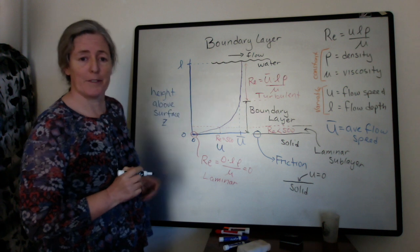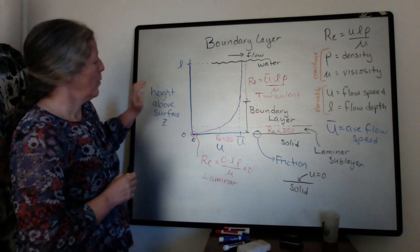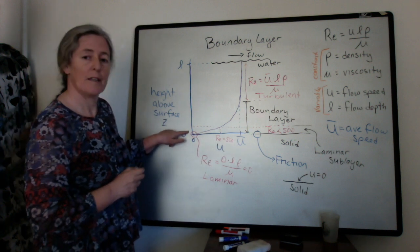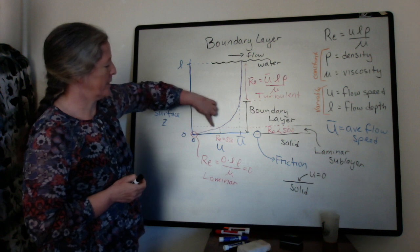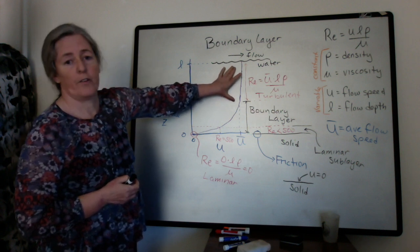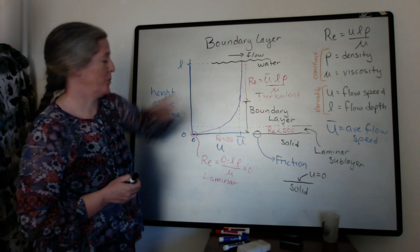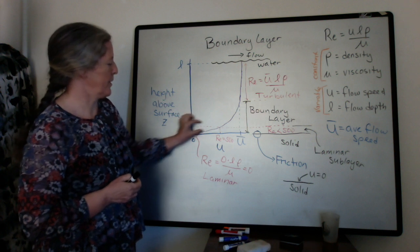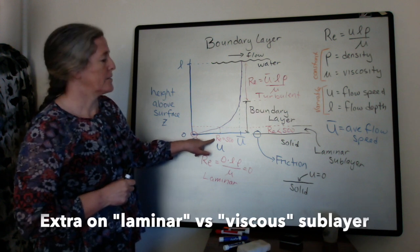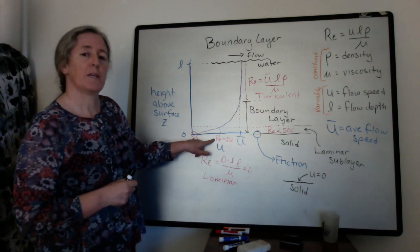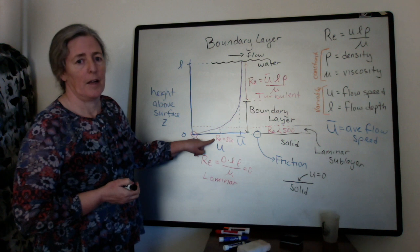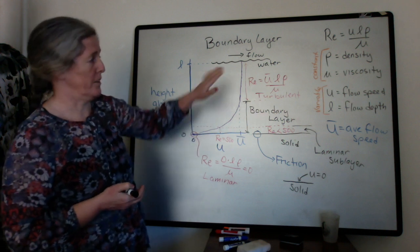Then you have the main flow up here. So in summary, what we have is a solid surface that creates friction. That friction slows down the flow that's in touch with it. That friction and slowing is transmitted upward in the flow to the top of the boundary layer. And then you have the rest of the flow going at an average flow speed downstream. The laminar sublayer is this part at the bottom where the Reynolds number is less than 500. And that's why it's called the laminar flow. It's sometimes also called the viscous sublayer. And that's because the force of viscosity has a larger influence on the behavior of the fluid than the kinetic forces related to the flow speed.